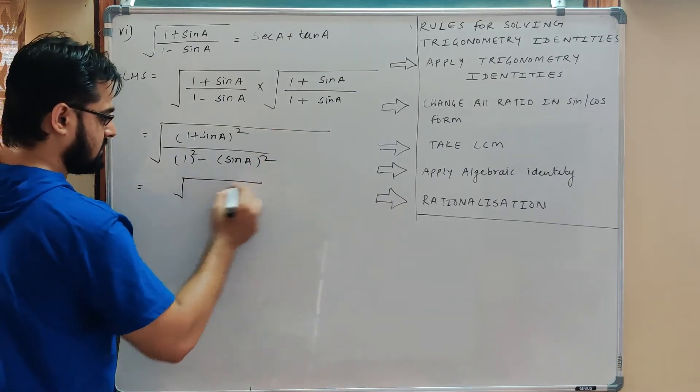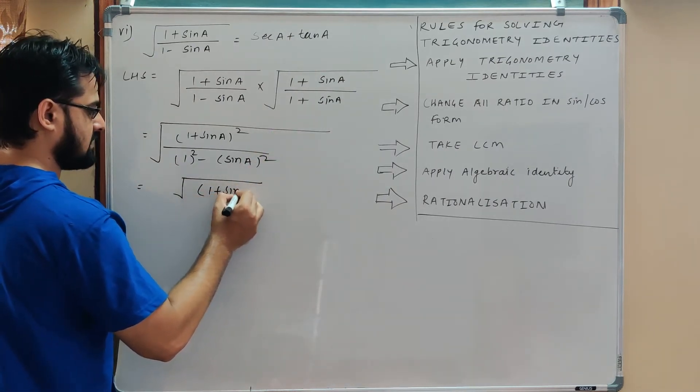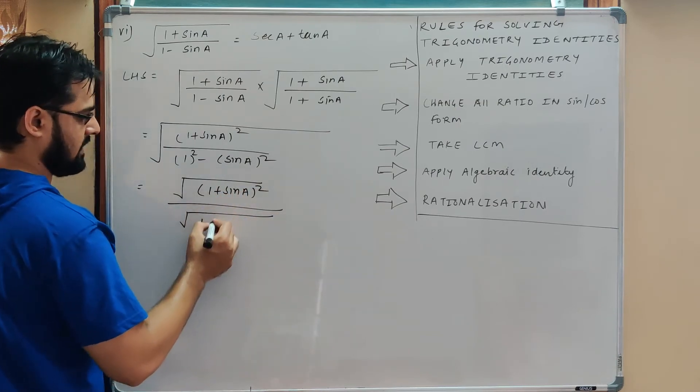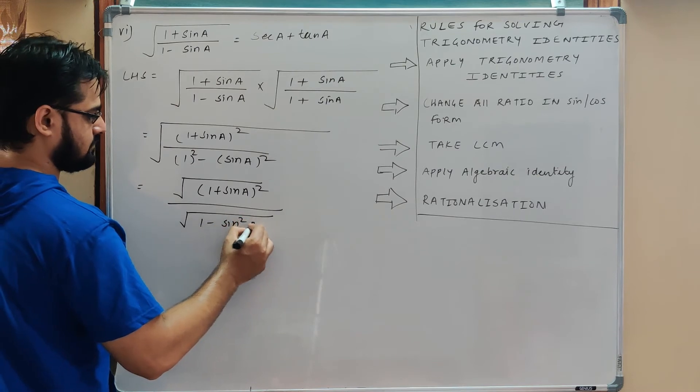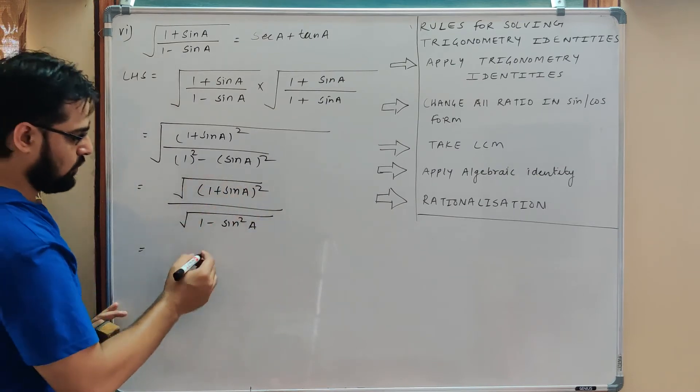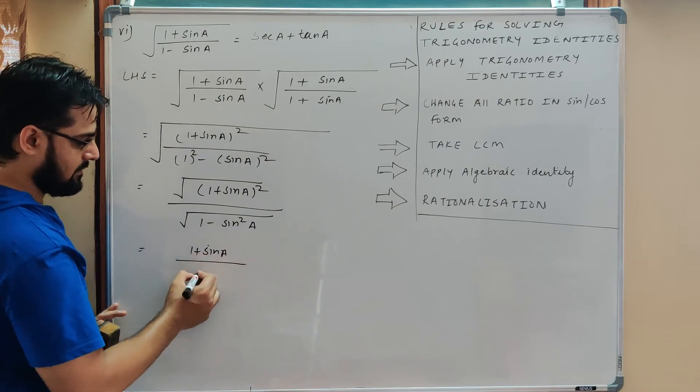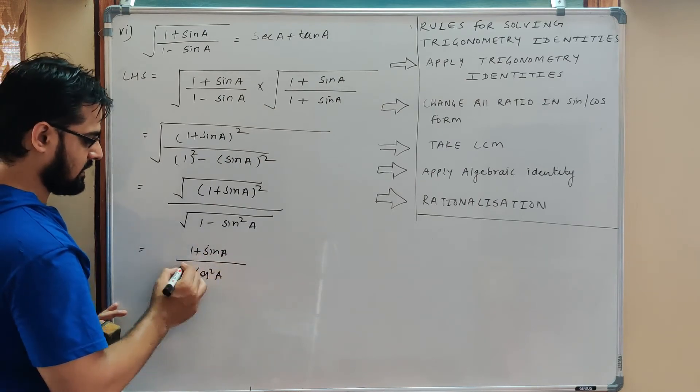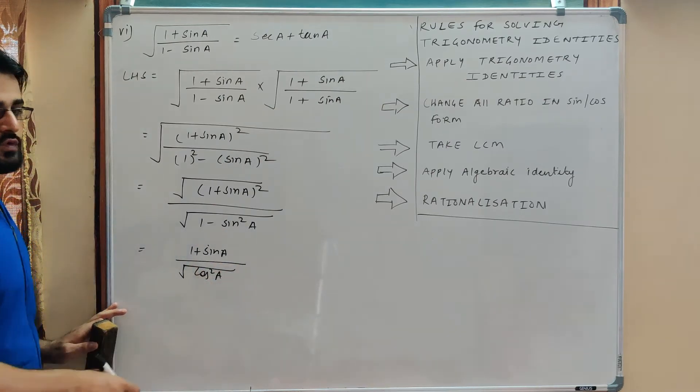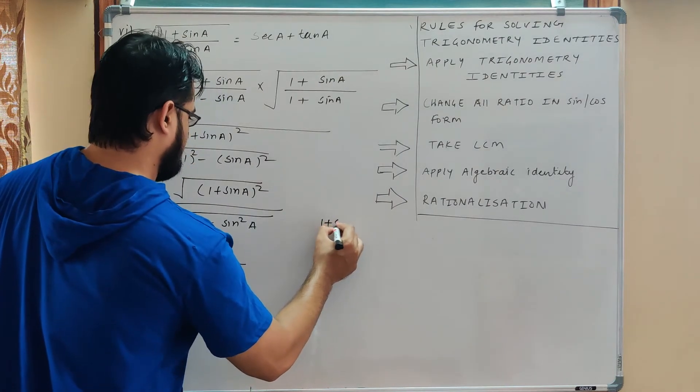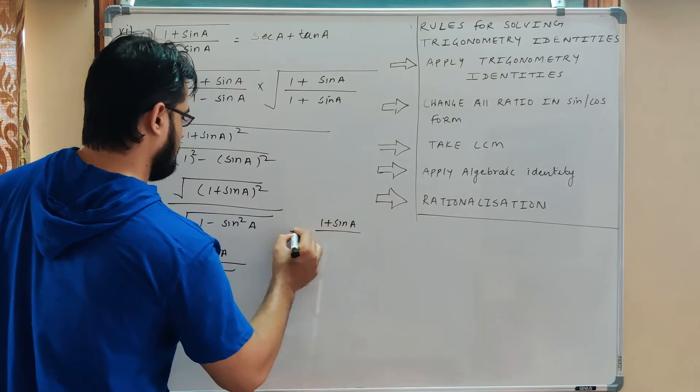Root separate. 1 plus sine A whole square under root, and root 1 minus sine square. In the denominator, one minus sine squared gives us 1 plus sine A upon cos squared A.